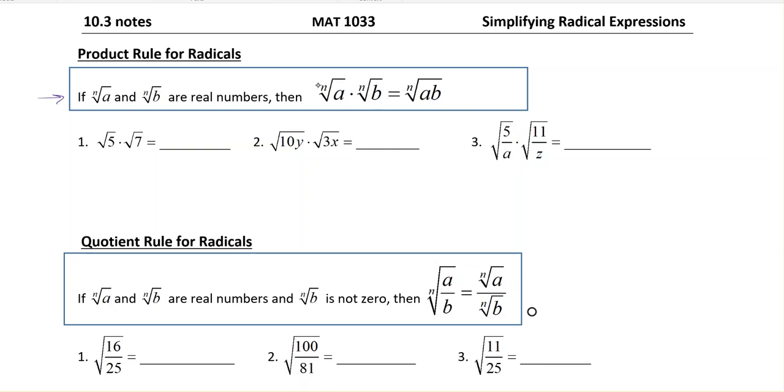So what this tells us is that it's got to be the same root in order for it to be able to be multiplied by each other. So if there's a square and a cube, then this rule doesn't work.